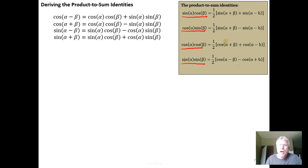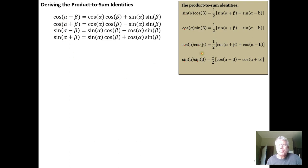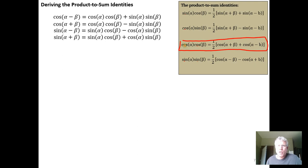To derive one of these identities, the tools we want to use are the sum and difference identities for cosine and sine, and the process is really straightforward. Let's say we wanted to derive the product identity for cosine.